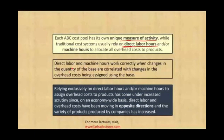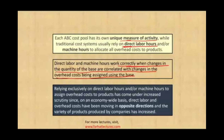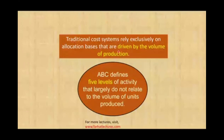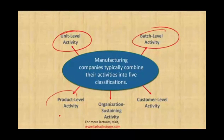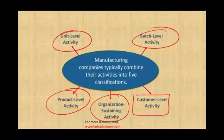Direct labor and machine hours work correctly only when changes in the quantity of the base are correlated with changes in the overhead being assigned. Oftentimes that's not the case, so the old method is being phased out. Traditional costing relies exclusively on allocation bases driven by volume of production. ABC defines five levels of activities that largely do not relate to the volume of units: unit level, batch level, product level, organizational sustaining level, and customer level.